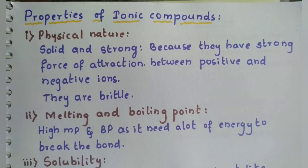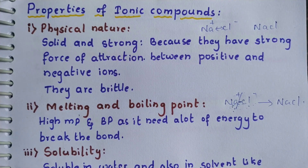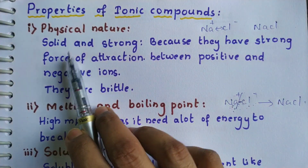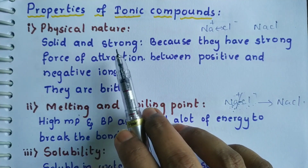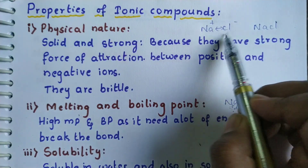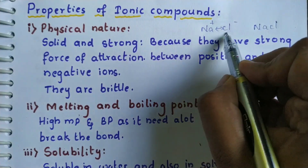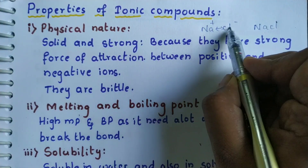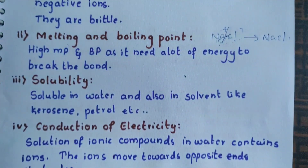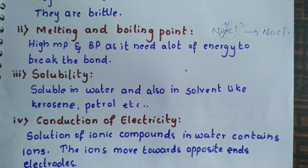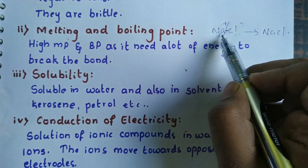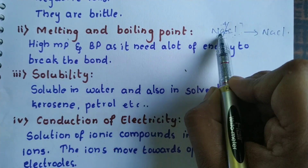So we have studied ionic compounds. Let us see the properties of ionic compounds. The first is physical nature: they are usually solid and strong, and they are brittle in nature. Why are they solid? Because they have a very strong force of attraction between the ions. Taking sodium chloride as an example, Na⁺ and Cl⁻ together have a very strong force of attraction, so they are solid in state. Next is melting and boiling point: they usually have very high melting and boiling points because the force of attraction is very high and it needs a lot of energy to break the bond.